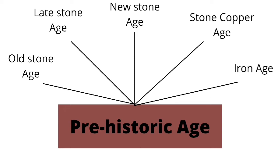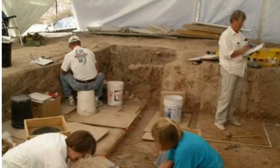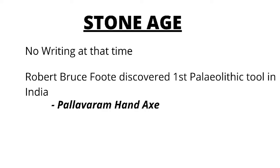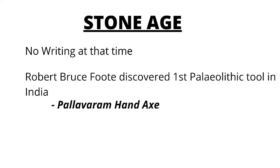The Stone Age was largely a period where writing was not invented, and hence the main source of information in this period is archaeological excavations. Robert Bruce Foote discovered the first paleolithic tool in India — the Pallavaram hand axe. The paleolithic site was named because 'paleo' meant old and 'lithic' meant stone.